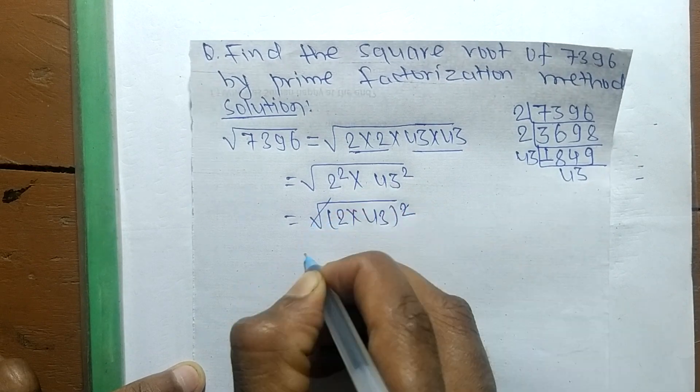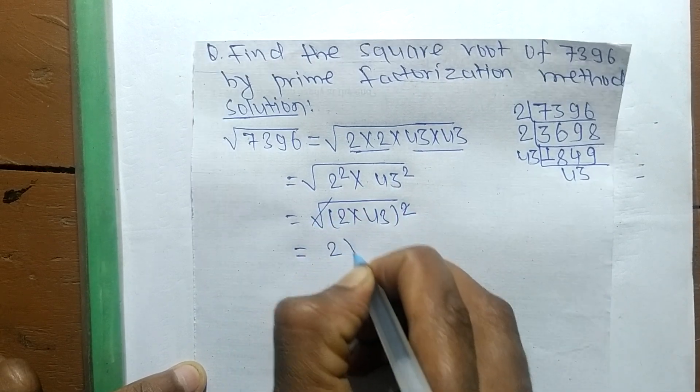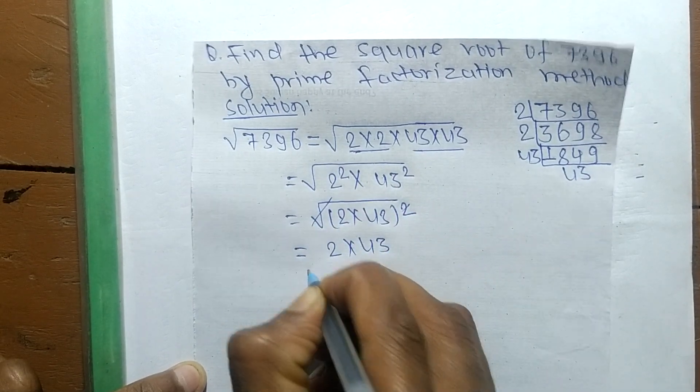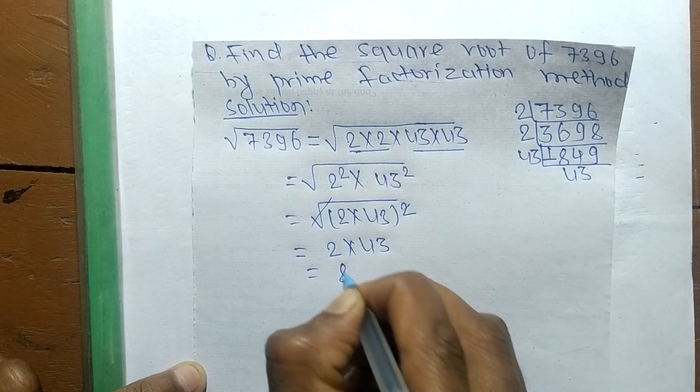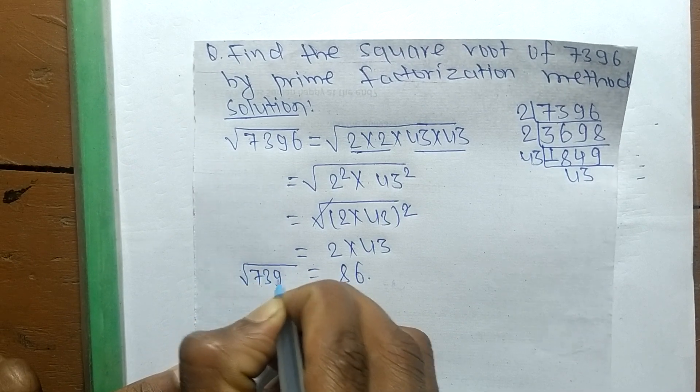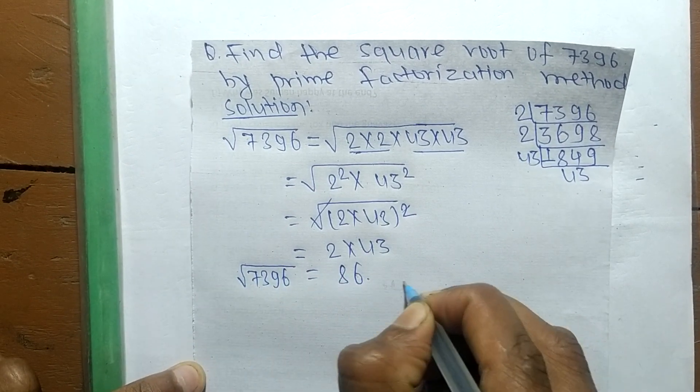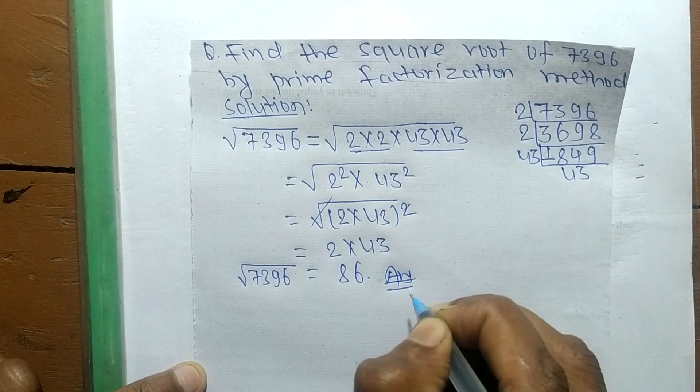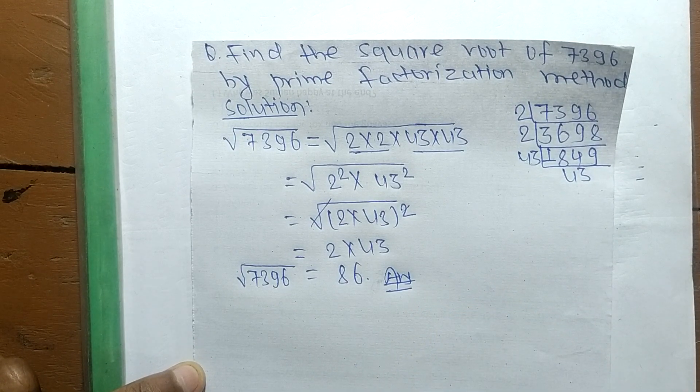Square and square root cancel, so the remaining is 2 into 43, which equals 86. The square root of 7396 is 86. Thanks for watching.